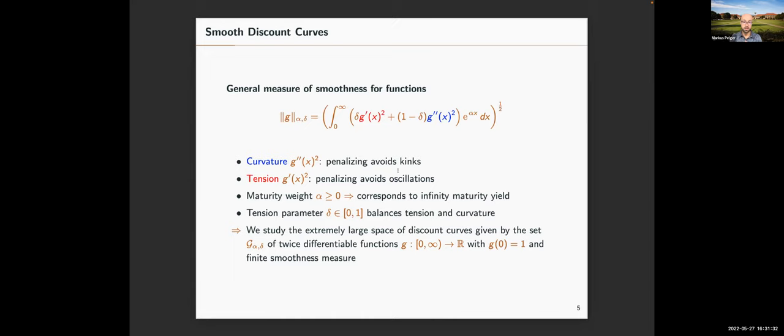We measure smoothness in terms of first and second derivatives. The second derivative can be interpreted as curvature — penalizing curvature avoids kinks. The squared first derivative can be interpreted as tension — penalizing it straightens the curve and reduces oscillation. There is a weight between these two called the tension parameter delta, telling us how much weight to put on the first versus the second derivative. We can also put different weights on maturities, governed by a parameter alpha, which corresponds to an infinite maturity yield and has an economic interpretation.